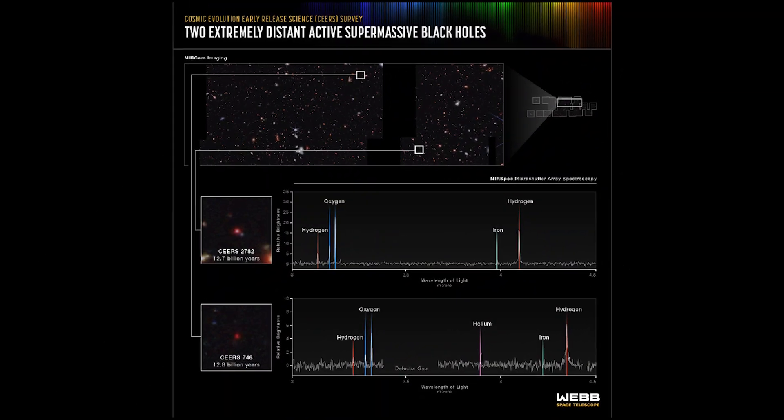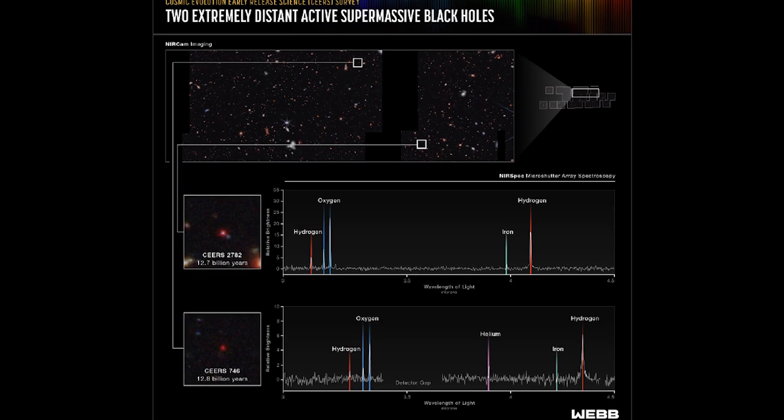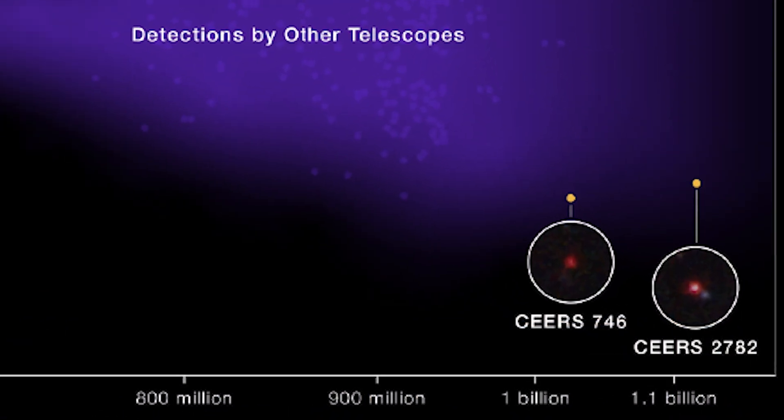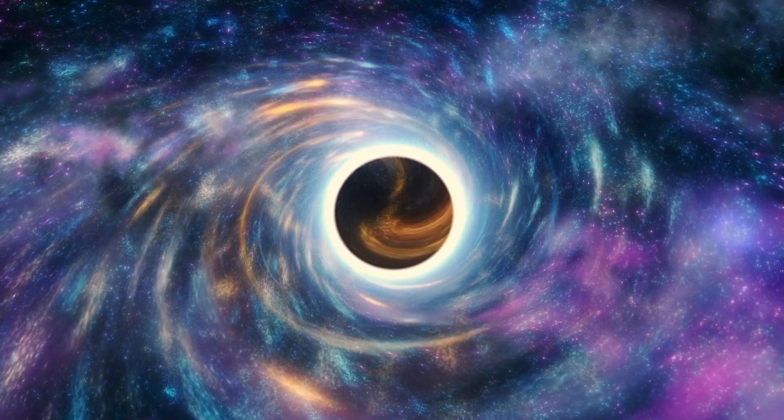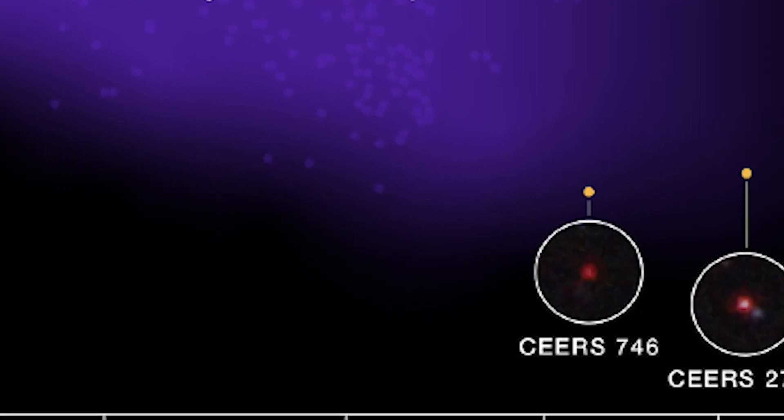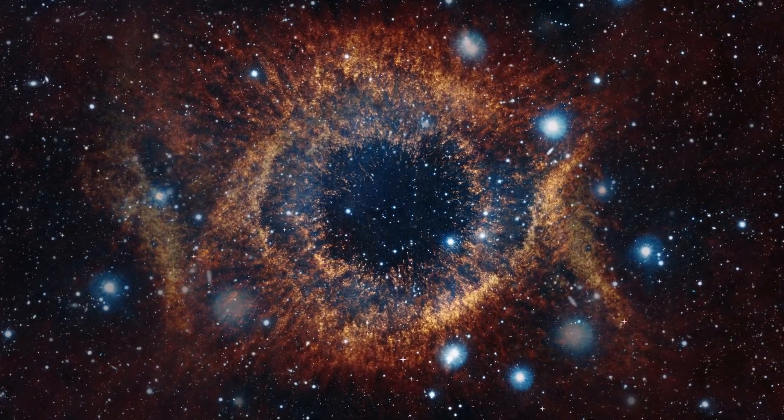The data also revealed two more small black holes weighing about 10 million solar masses each. The first, at the center of CEERS 2782, formed 1.1 billion years after the Big Bang, while the other, within CEERS 746, existed 1 billion years after the Big Bang.